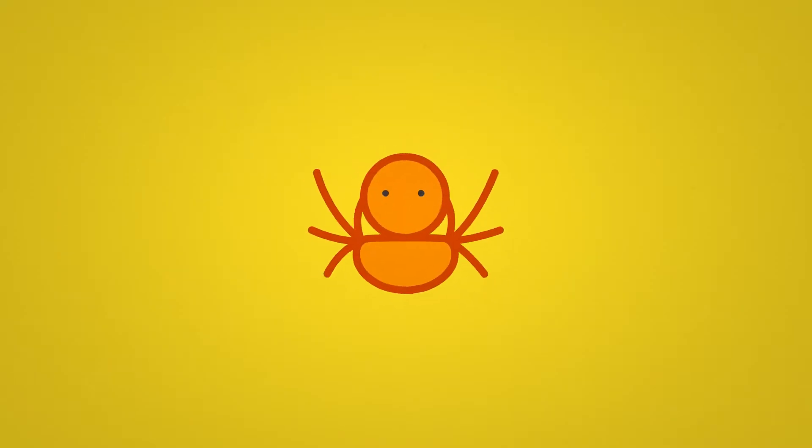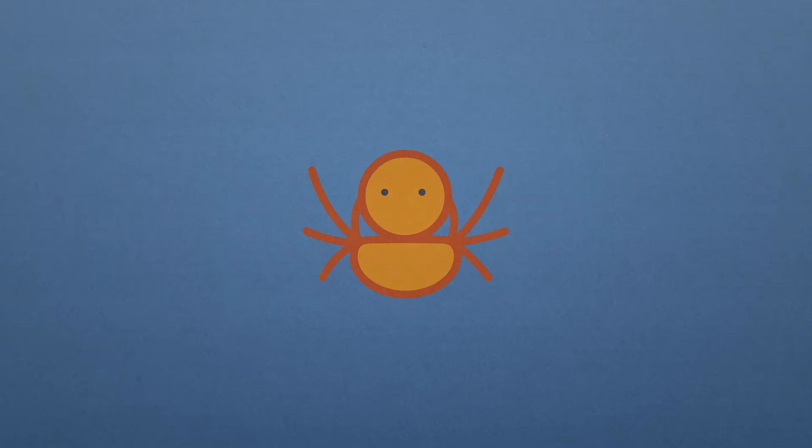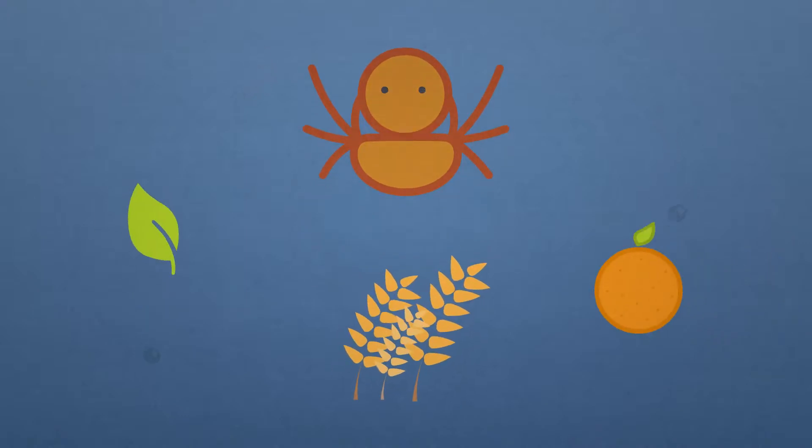Where do red tides come from? Phytoplankton is the base not only of the food chain in aquatic ecosystems, but also of the Mediterranean diet.